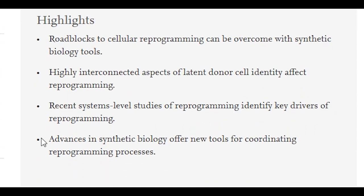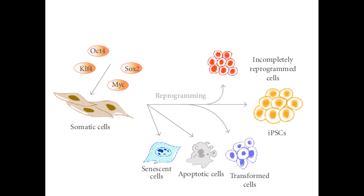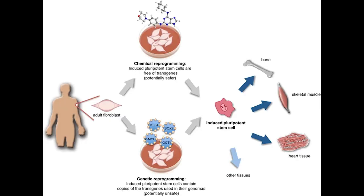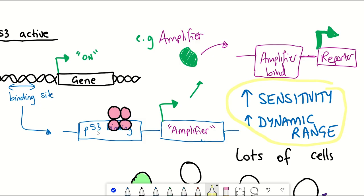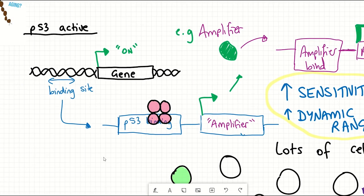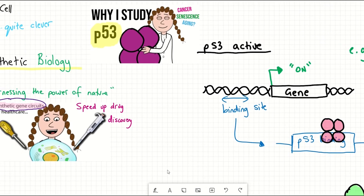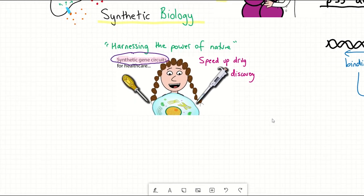So how can we use alternative synthetic biology approaches to make this more sophisticated? Ultimately, we have a phenotype that we're interested in — stem cells — and we want to test a variety of different therapeutic strategies. Using different synthetic gene circuits could be built to try and speed up that process, increase the signal-to-noise ratio, and overcome some of the limitations that we currently see with cellular reprogramming.